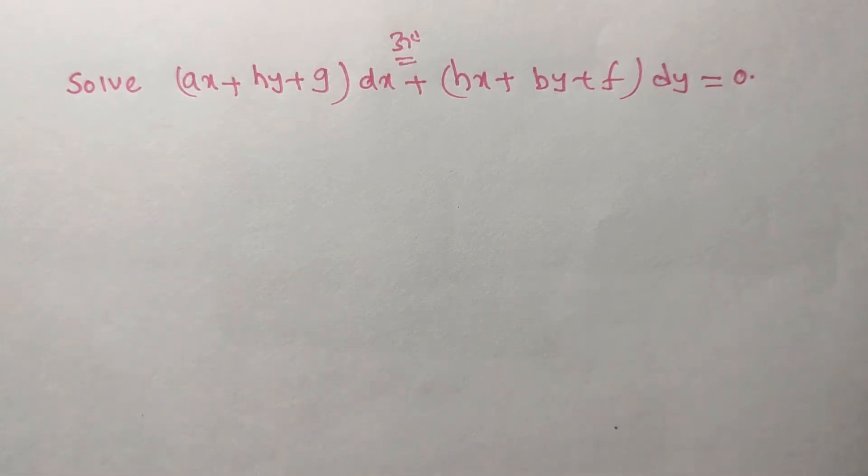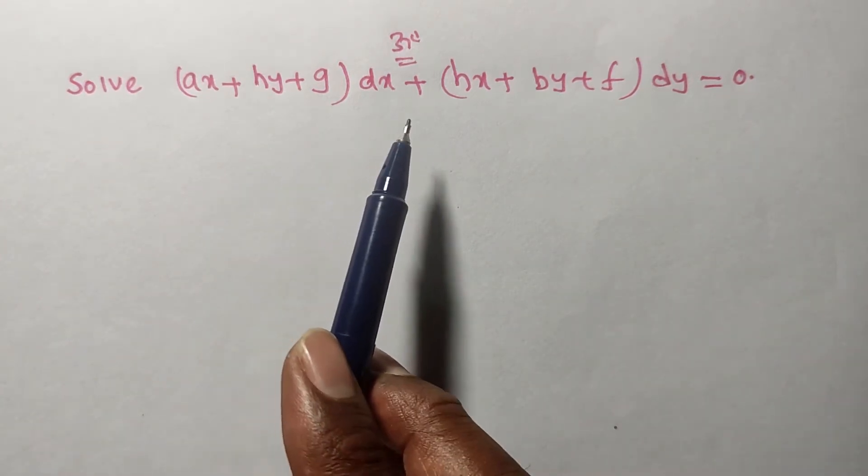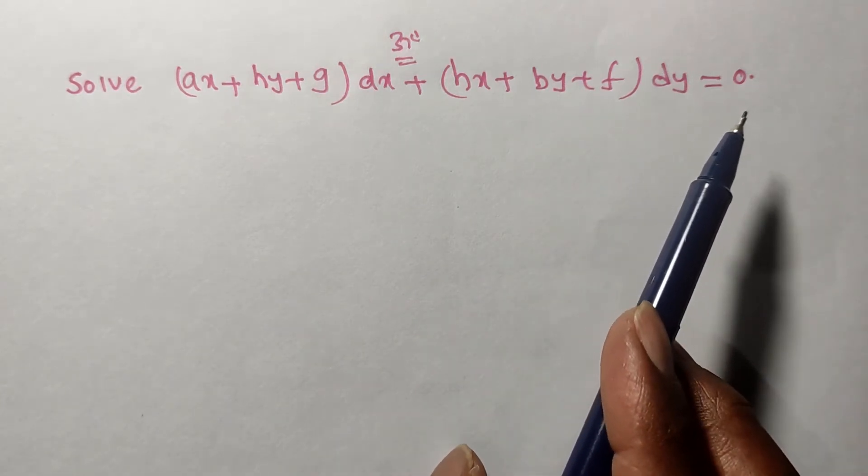Given problem is: solve (ax + hy + g)dx + (hx + by + f)dy = 0.